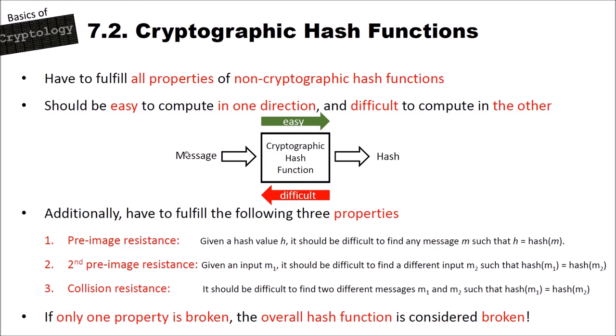The second property is second pre-image resistance: given an input m1, it should be difficult to find a different input m2 such that hash(m1) equals hash(m2). That means you cannot find another message that produces the same hash as your original message. Then we have collision resistance: it should be difficult to find two different messages m1 and m2 such that hash(m1) equals hash(m2). With collision resistance, the criteria is even harder — this is even harder.